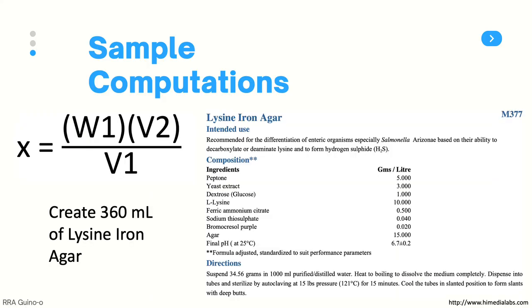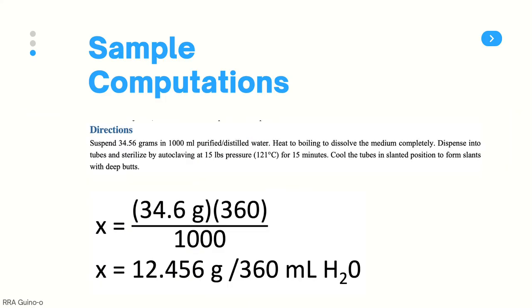We have another problem, this time for lysine iron agar. We need to make 360 ml of LIA, and the manufacturer's instructions say to suspend 34.56 grams in 1,000 ml of purified or distilled water. The answer is 12.456 grams, or approximately 12.5 grams per 360 ml of water. We multiplied 34.6 grams (rounded up from 34.56 grams) by 360 and divided by 1,000.